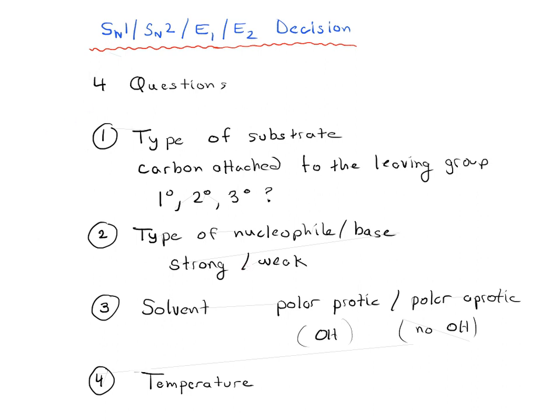We already talked about the type of substrate that we're looking at, whether our leaving group is attached to a primary, secondary, or tertiary carbon, and this is the most important question to ask. If it's primary, it's almost certainly going to be SN2. It's definitely not going to be SN1 or E1. It's not going to be E2 unless there's very specific circumstances. If it's tertiary, it's not going to be SN2.